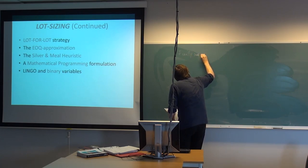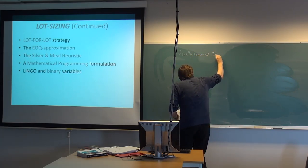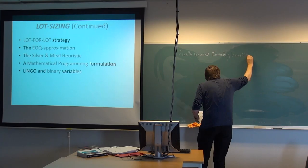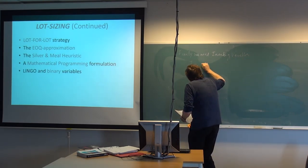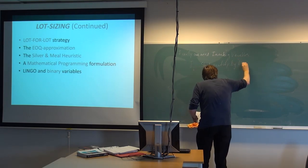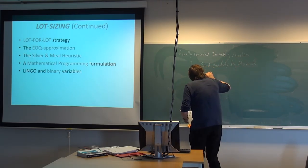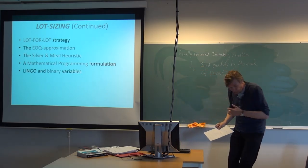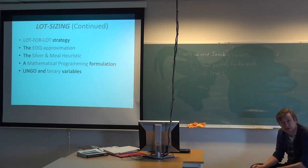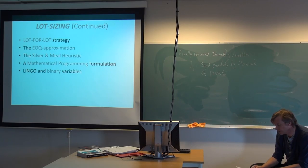Finally, we need inventory variables I_t: a stored quantity by the end of period t. We make the assumption of measuring end inventory. We could use average inventory as well, but that makes it tricky in this setting. The consequence of all we've discussed is a mathematical programming model in the form of a linear program — specifically a mixed integer program.